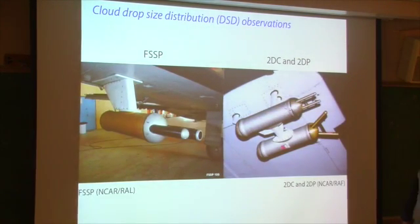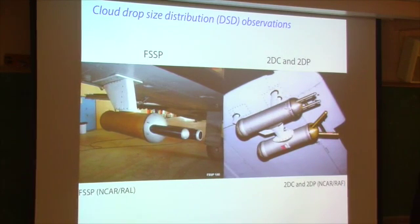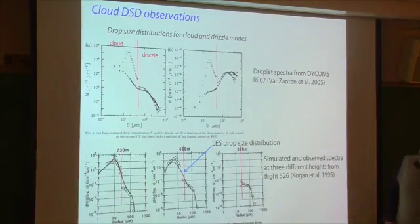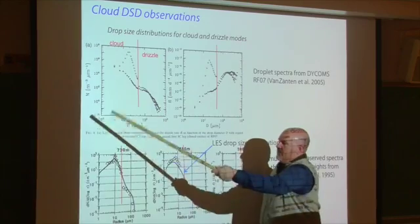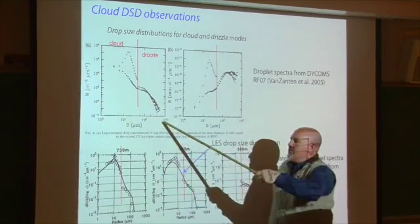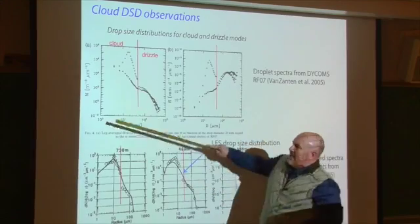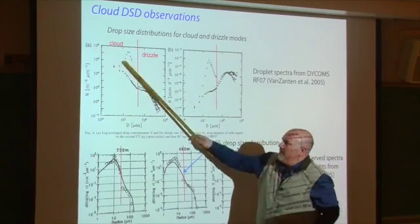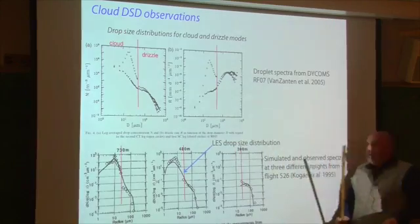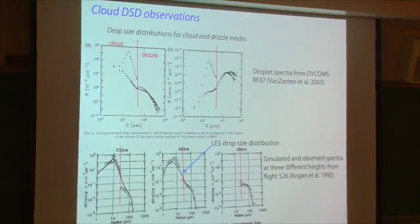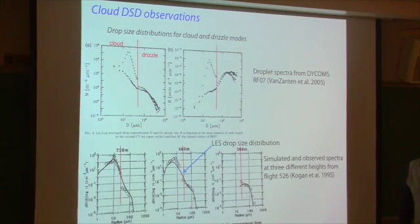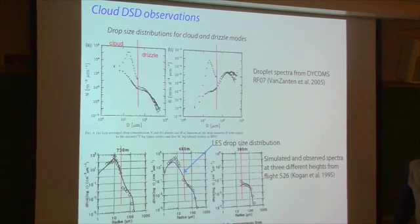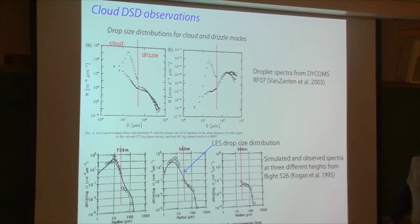Sometimes we also use particle probe data from aircraft — you literally fly through the cloud and get droplet spectral information. You get a droplet diameter and number concentration — you'll often see a cloud mode and then a precipitation mode. We use these data every once in a while, but you have to be careful not to just pull down all these data; there's a lot of instrument black art associated with using them in a smart way.